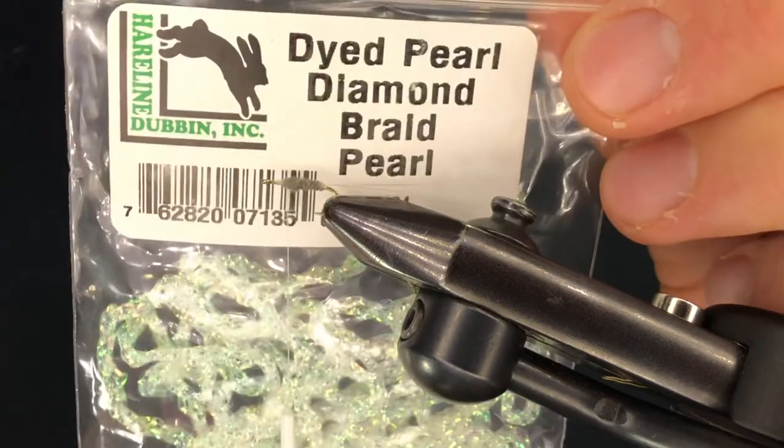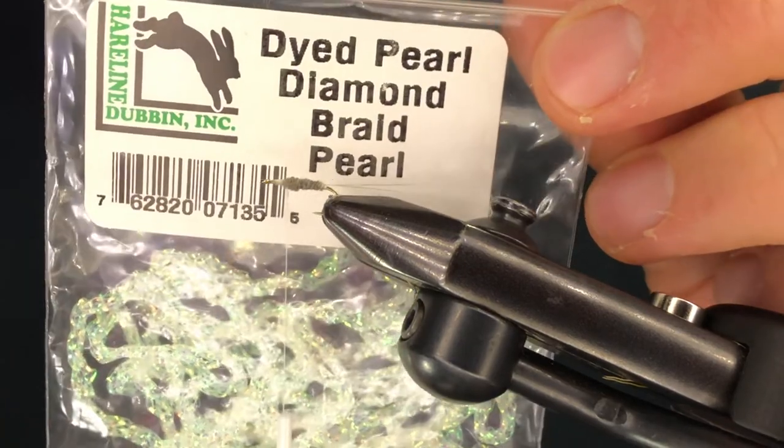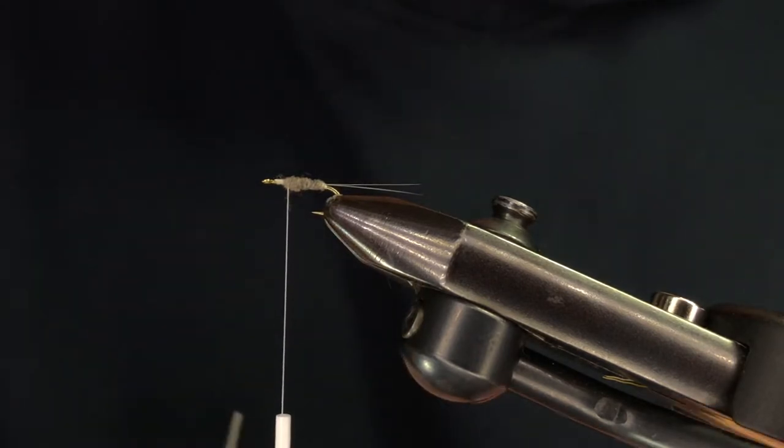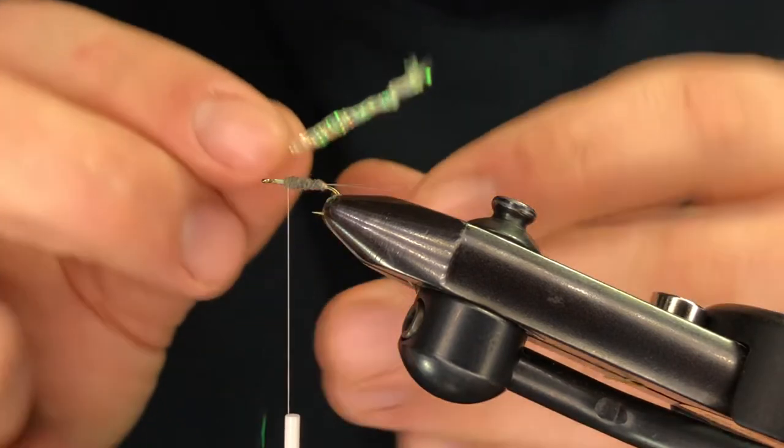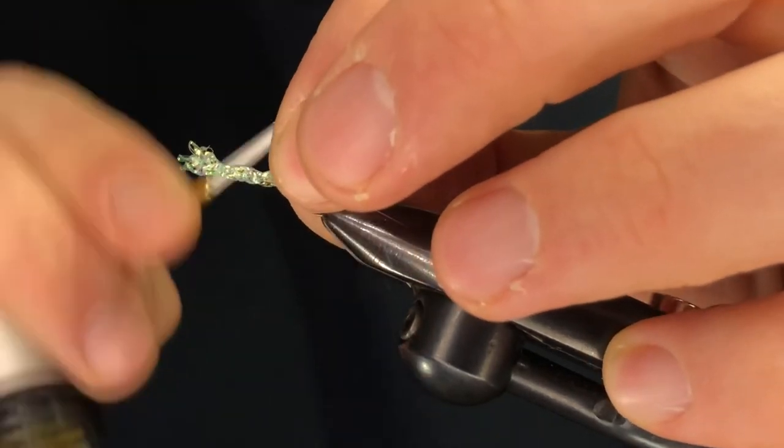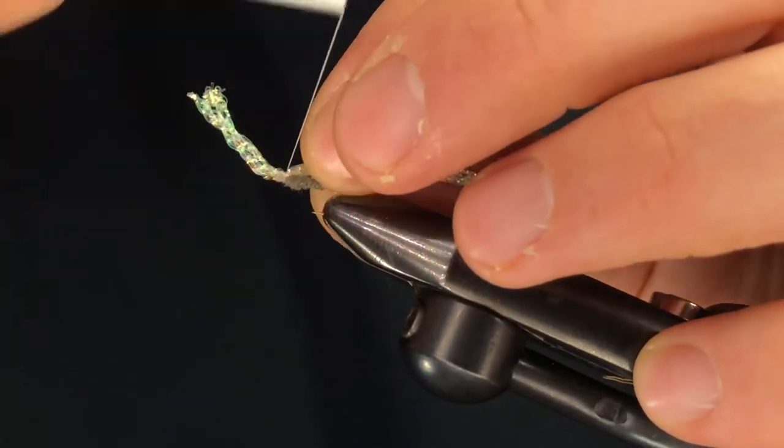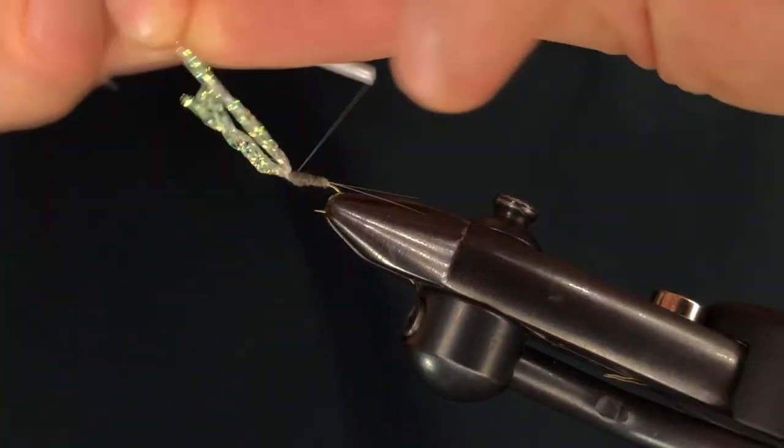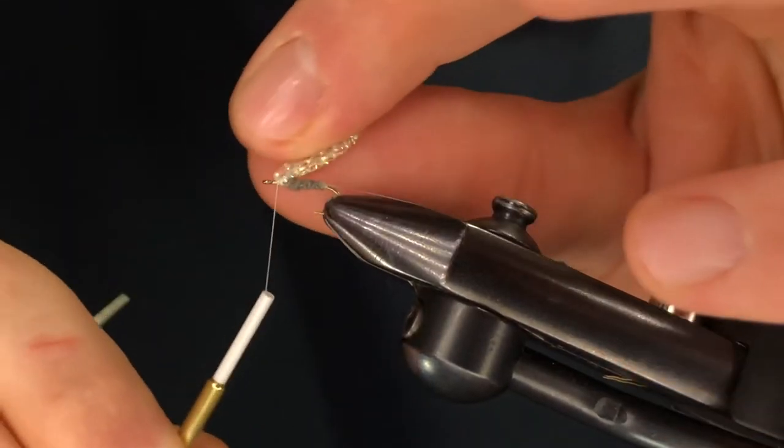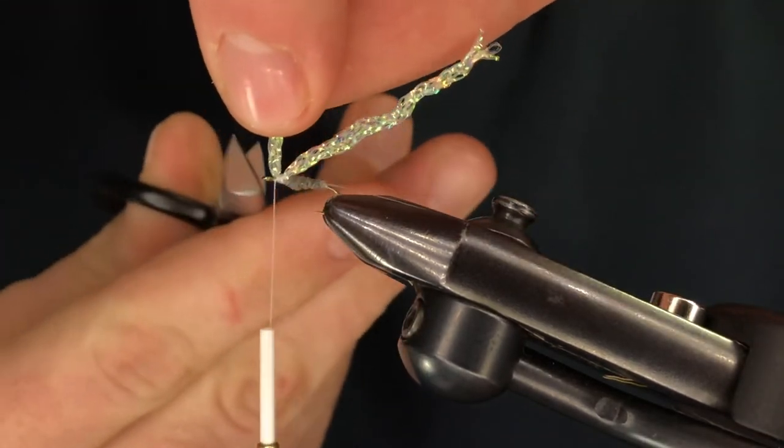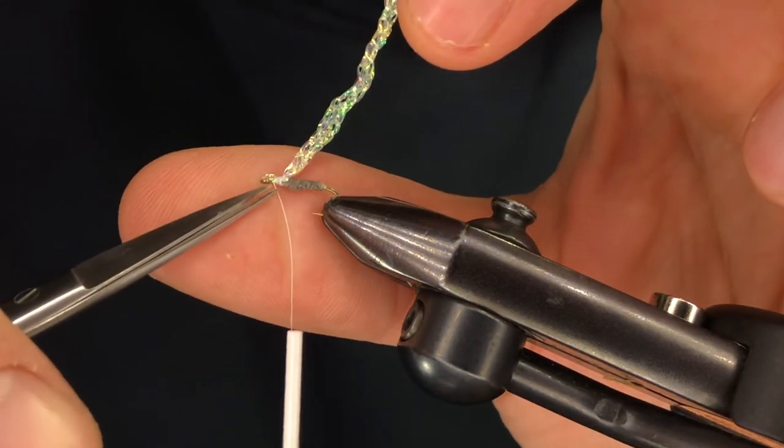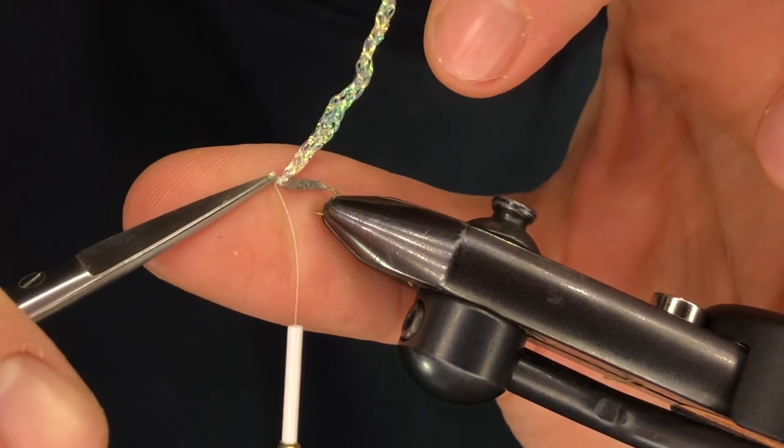We're going to use some dyed pearl diamond braid for the wing here. This is a great little material used for bodies, for wings. You can get pretty creative with this. It can be a little bit slippery though. The pearl is my favorite. I think it works for almost every color you could want out there. And secure that in with three, four, five wraps and trim off the front. I usually leave this back end attached. I'll show you why here in a second.